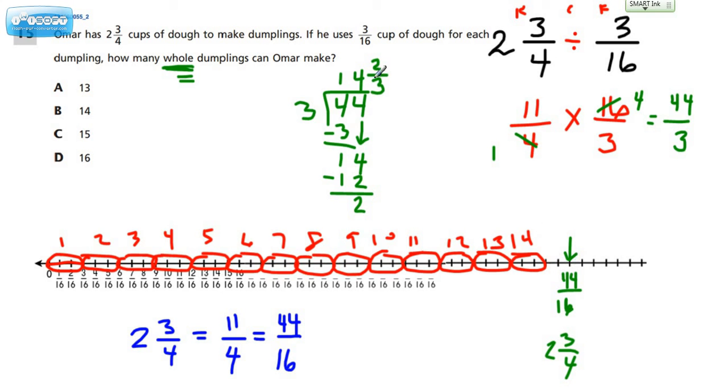And we didn't have enough. See the two-thirds? That's not enough to make the fifteenth dumpling. To make that fifteenth dumpling, we'd need one more little grouping. Not enough. So we're going to go with fourteen as our answer. B is correct.